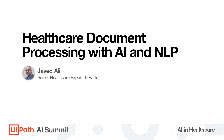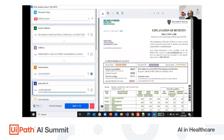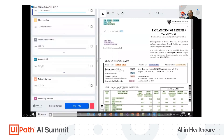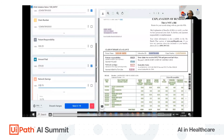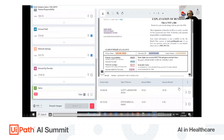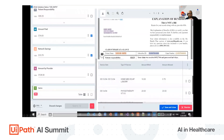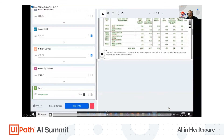Here we're going to show you one EOB from where the data would be extracted. The right-hand side is the EOB and the left-hand side is the mapped or configured data which needs to be extracted. You can see the complete table and all the details about the amount, the name of the person, the IDs — all that information is being extracted.